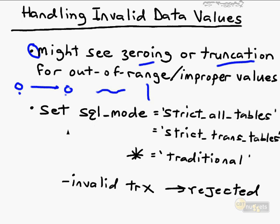One way to configure MySQL to better handle missing, invalid, or out-of-range data values is to set a different SQL mode. There are a number of modes to choose from, each with various levels of strictness. You have STRICT_ALL_TABLES and STRICT_TRANS_TABLES. The difference depends on whether you're using a storage engine that supports transactions. STRICT_TRANS_TABLES applies rigorous input checking only to tables using a transaction-based storage engine like InnoDB.